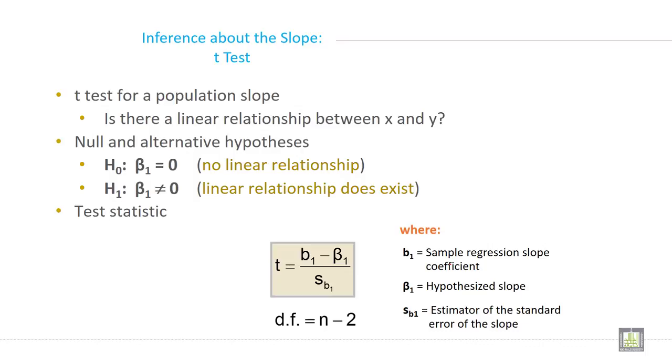Inferences about the slope. T test for a population slope. Is there a linear relationship between X and Y? This is the hypothesis. So null and alternate hypotheses will be H0: B1 equals 0, no linear relationship, and H1: B1 not equal to 0, linear relationship does exist.